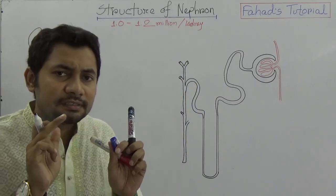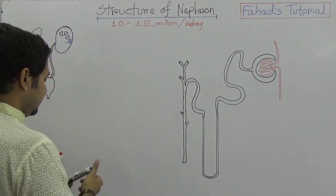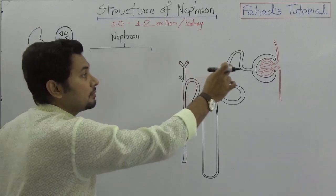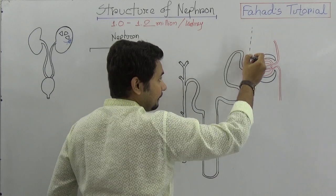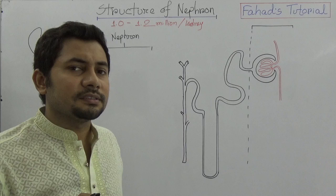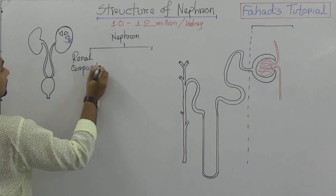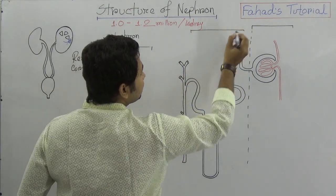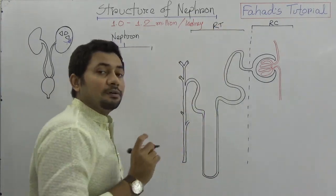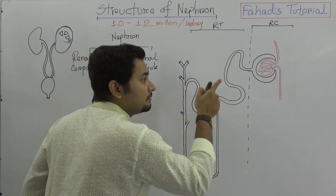If you see closely, the nephron has two parts. If I draw the nephron individually, we find there are two segments: one part is known as the renal corpuscle (RC) and the other part is the renal tubule (RT).